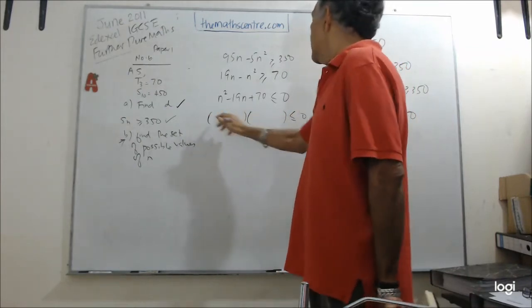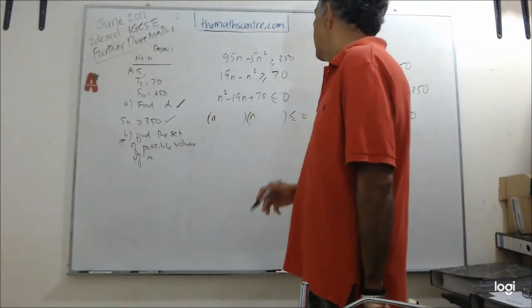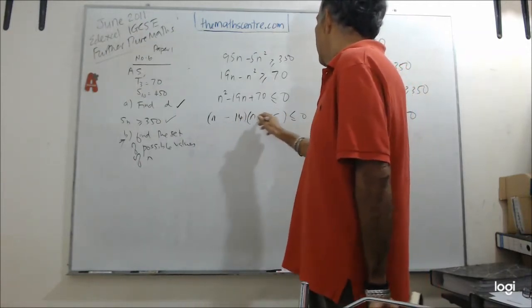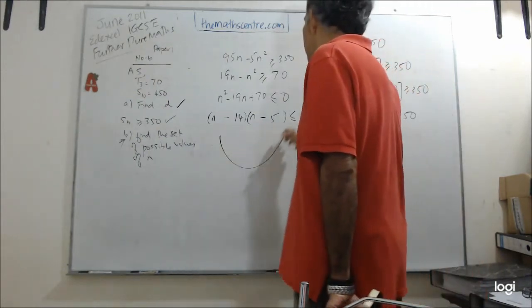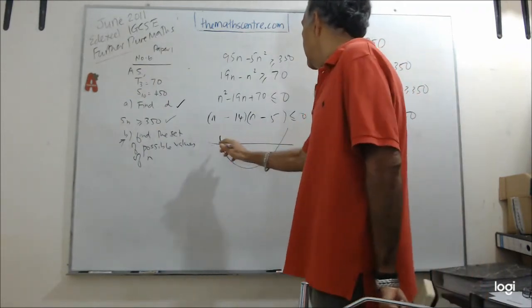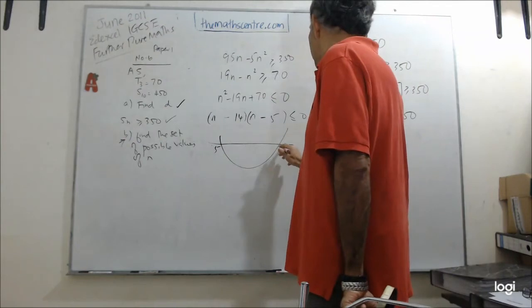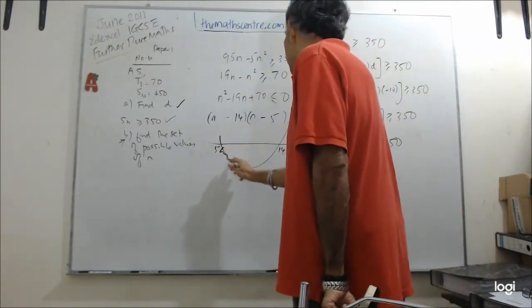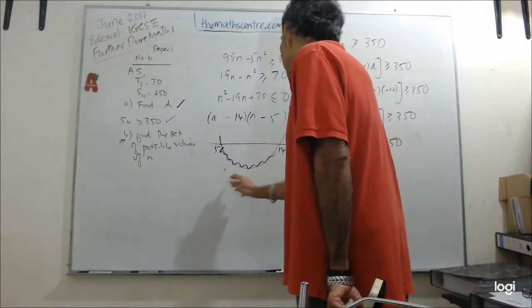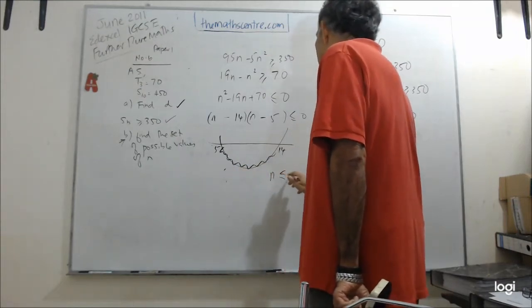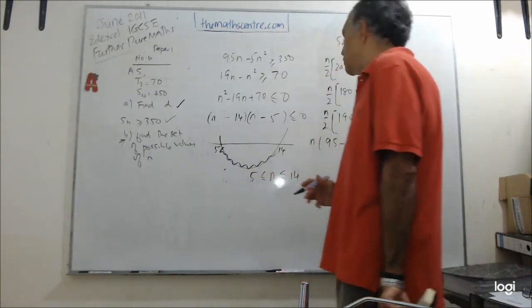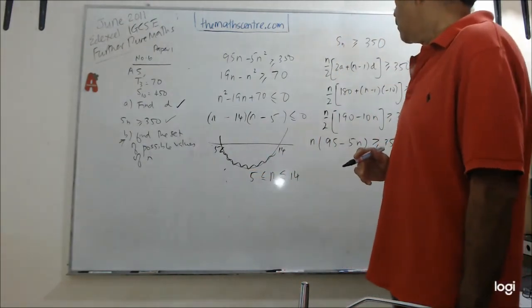So I have N, what is this? 19. So I have N minus 14, N minus 5. That looks good. So now I have N minus 14, N minus 5. So less than 0, we are looking at this part. Therefore, N lies between 5 and 14. And we are done.